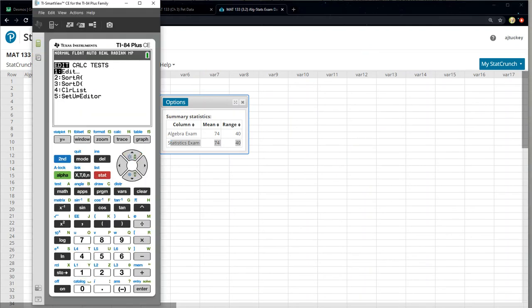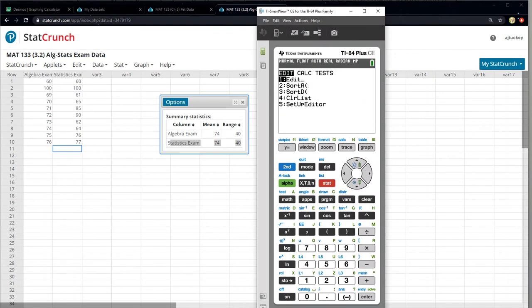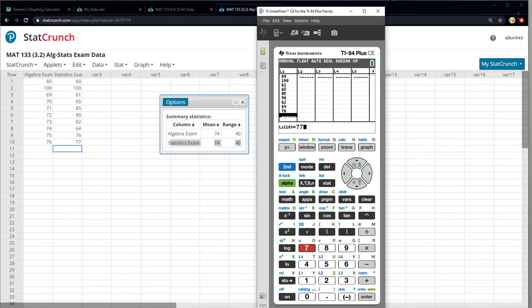Now in the calculator, if I want to do the same thing, I go to stat, edit, I clear out that old data. That was the pet data actually. And then I type in the stats exam. And then I go to stat, calculate, one variable statistics. L1 is where I put the stats exams. I go down to calculate and press enter.